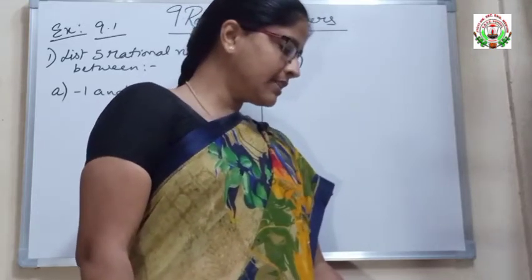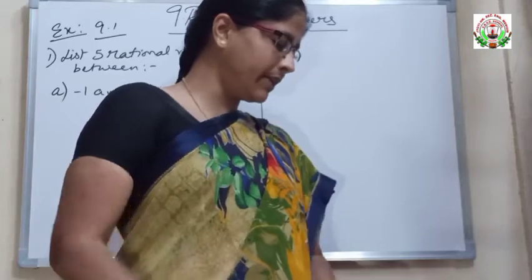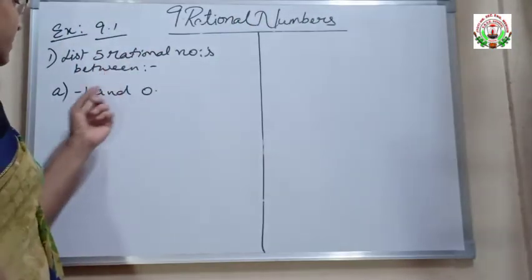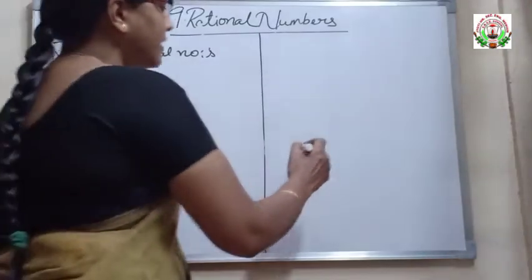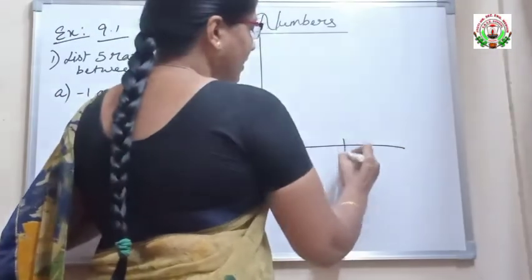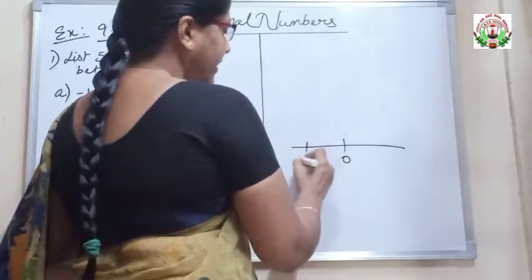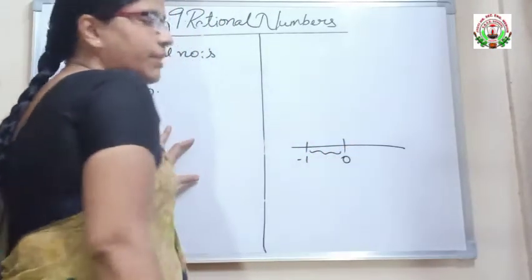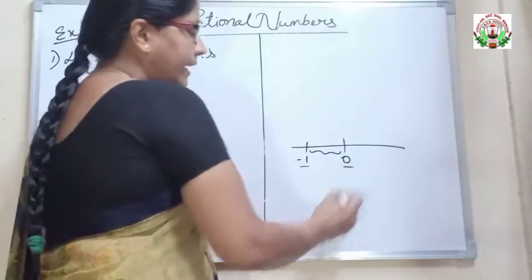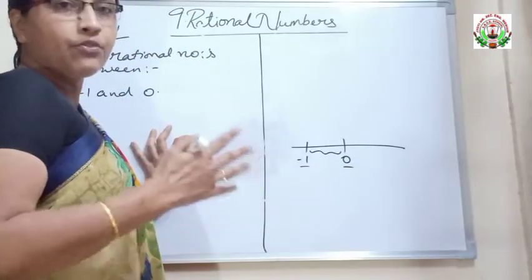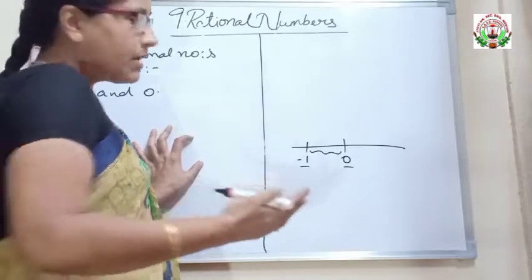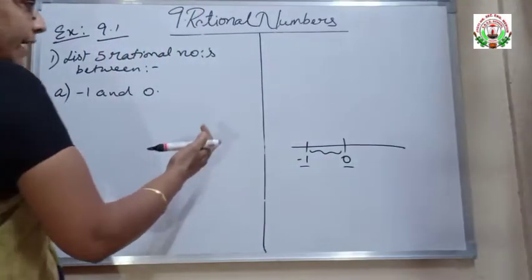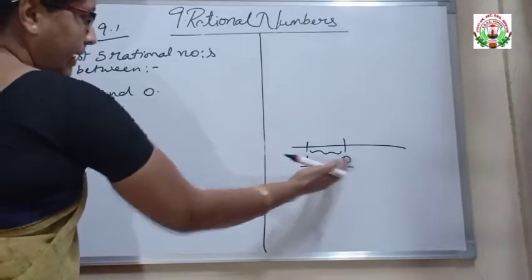The first question is: list 5 Rational Numbers between minus 1 and 0. On the number line, 0 is here and minus 1 is here. There are infinite numbers between minus 1 and 0, but we just have to find 5 Rational Numbers between these two numbers.